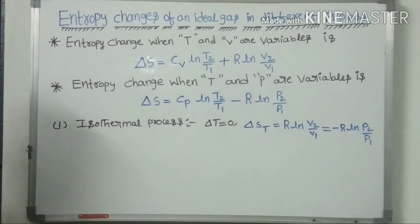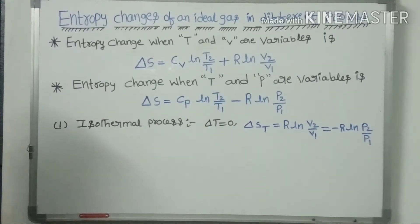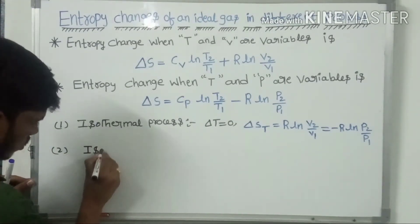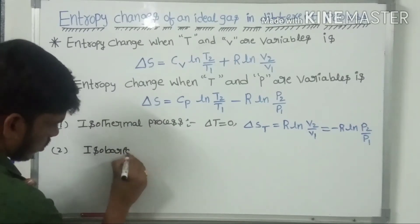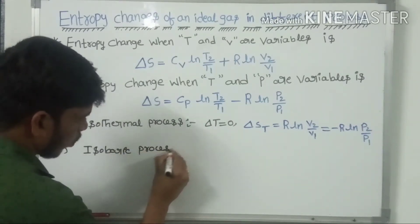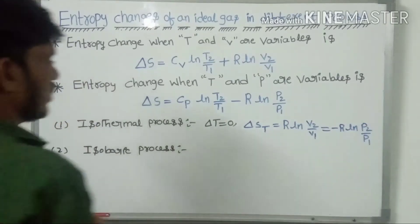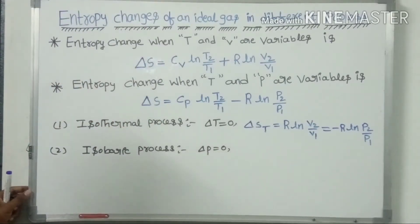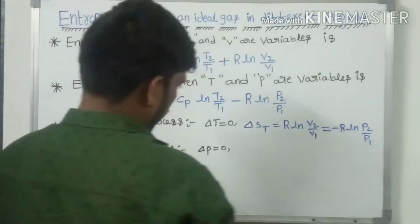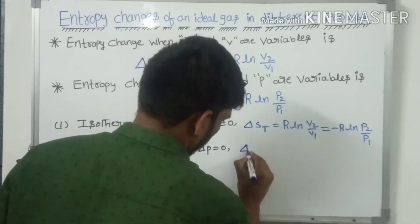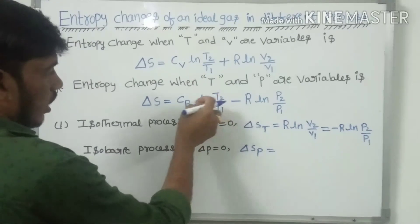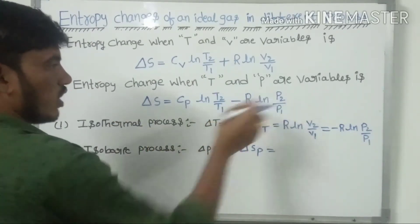Next is the isobaric process. In the isobaric process, pressure is constant, therefore the change in pressure is equal to 0. Therefore the entropy change of an ideal gas is given by delta S subscript P equal to Cp ln(T2/T1).